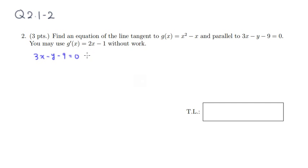I'm going to solve this equation for y. So I'm going to subtract 3x and then add 9. So we have negative y is equal to negative 3x plus 9. Then we can just multiply through by negative 1 so that y is isolated, which gives you 3x minus 9.